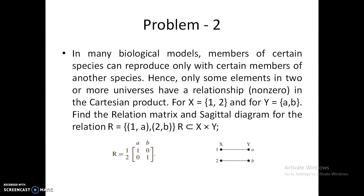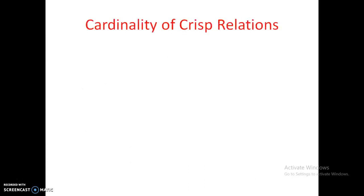So these are the things for the relational matrix and sagittal diagram. Up to this point we have studied Cartesian product, crisp relations, relational matrices, and sagittal diagrams. Now let us see the cardinality of crisp relations.